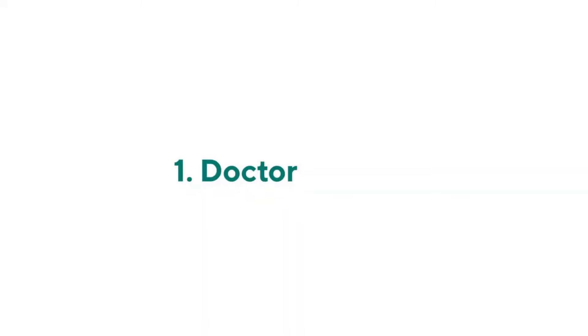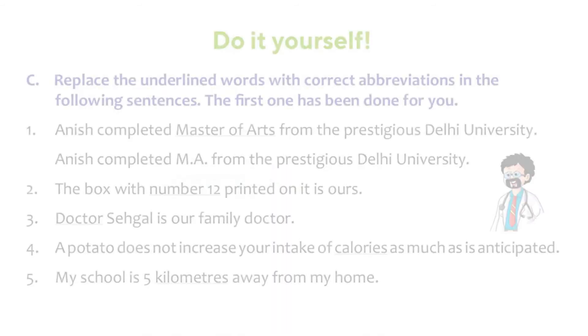One: doctor. This is how the abbreviation looks like. Second: calories. This is the abbreviation for that. Third one: kilometers. We write it as K-M. Fourth one: kilograms. K-G. How do you write number in an abbreviated form? Like this. There are other words you can find abbreviations for in that exercise.